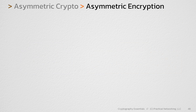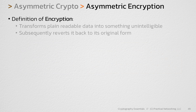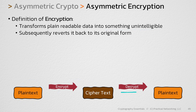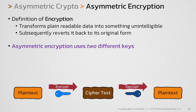Earlier in the course, I gave you a definition for encryption and showed you an illustration to represent it. Encryption takes something plain and readable to anybody, encrypts it and turns it into ciphertext — which is unintelligible — and then has the ability to decrypt it to turn it back into plaintext. Well, asymmetric encryption does the exact same thing, except it does it with two different keys.